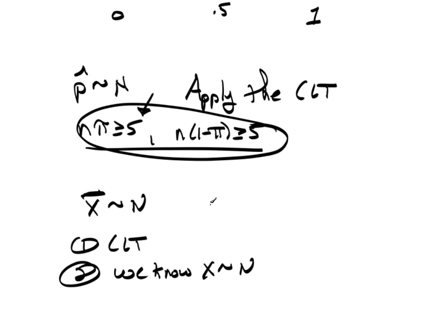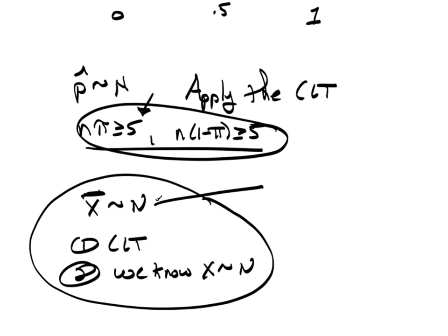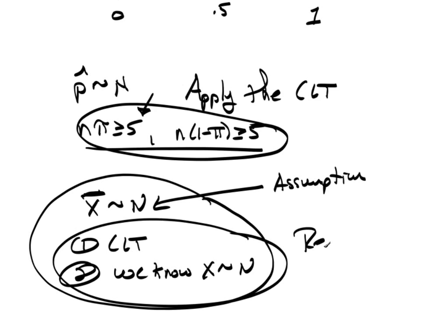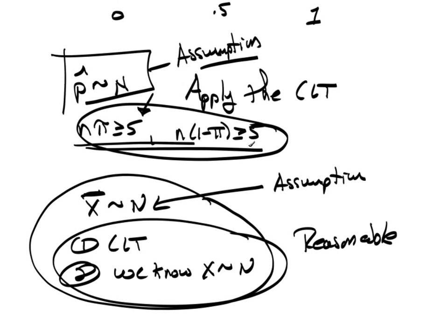So, if you're talking about the mean, you have to specify this is the assumption. This is how you know that assumption is actually reasonable. Again, if we're talking about proportions, this is the assumption. And this is how we know the assumption is reasonable.